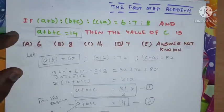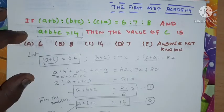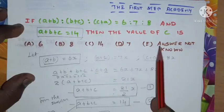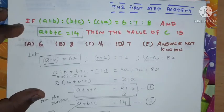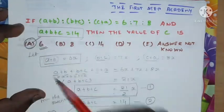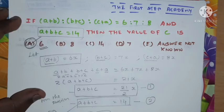Looking at the question: if (a+b):(b+c):(c+a) = 6:7:8 and a+b+c = 14, then the value of c is — option A: 6, option B: 8, option C: 14, option D: 7, option E: answer not known. We found the answer as 6, hence option A is correct. Hope you understand how we found the answer. Thank you for watching — this is the First Step Academy.